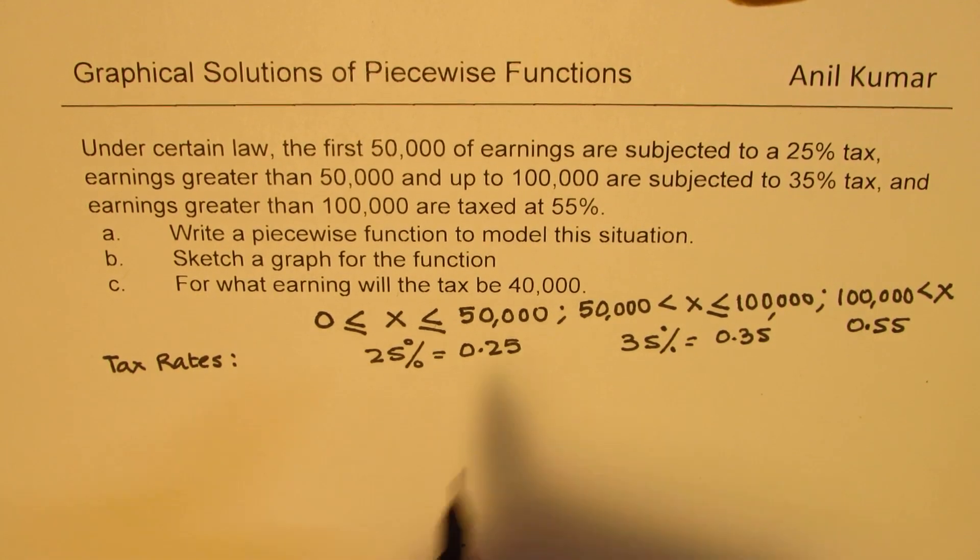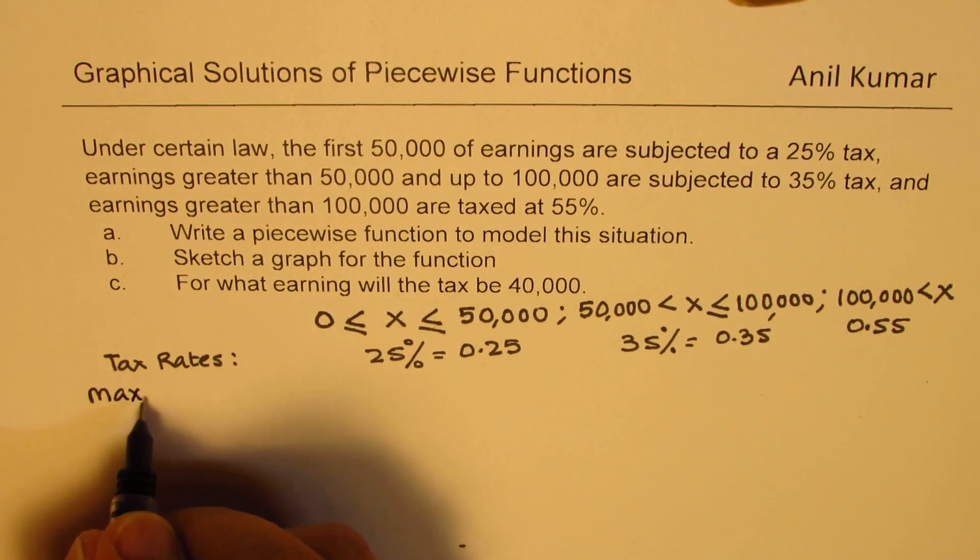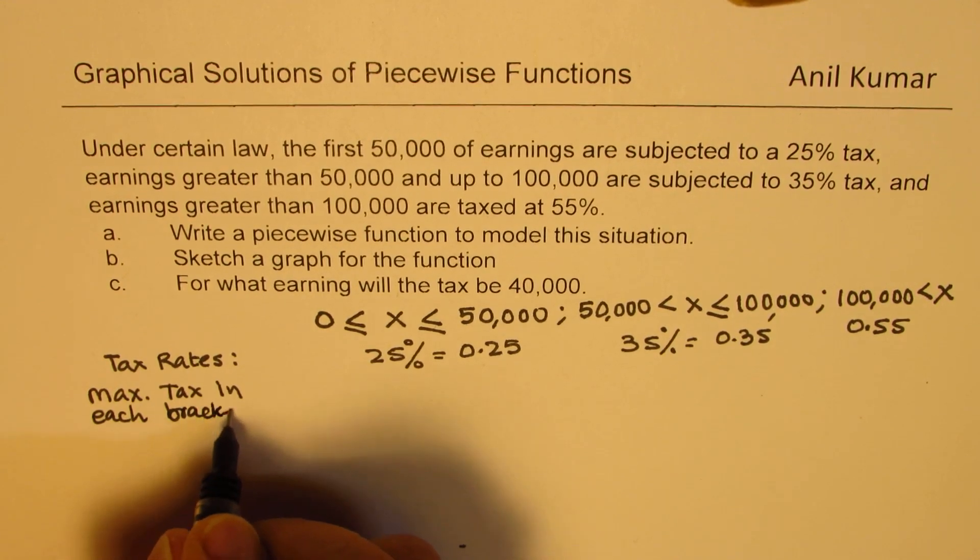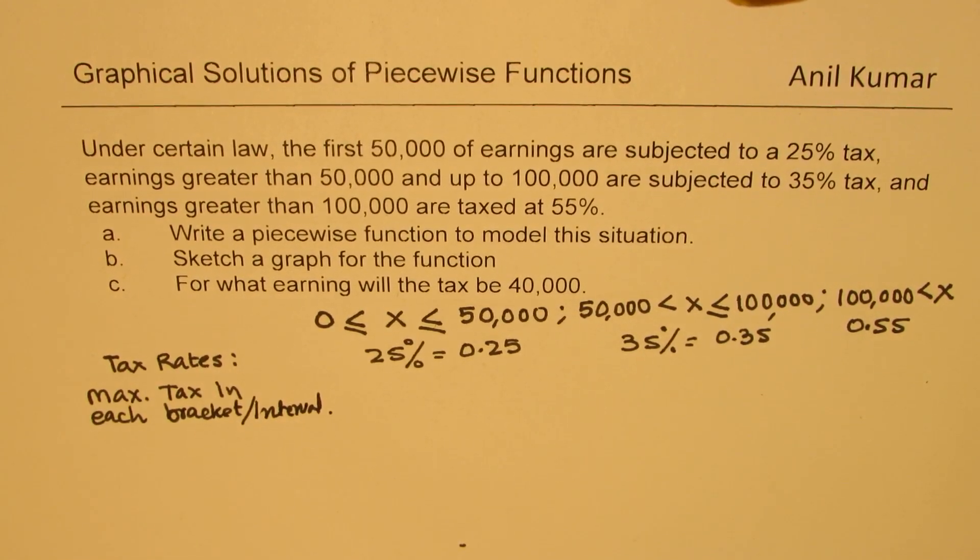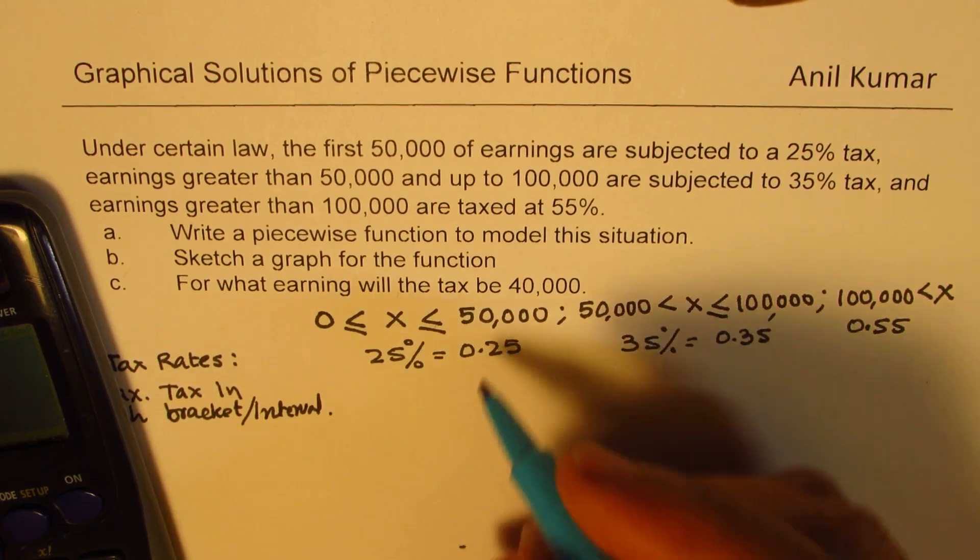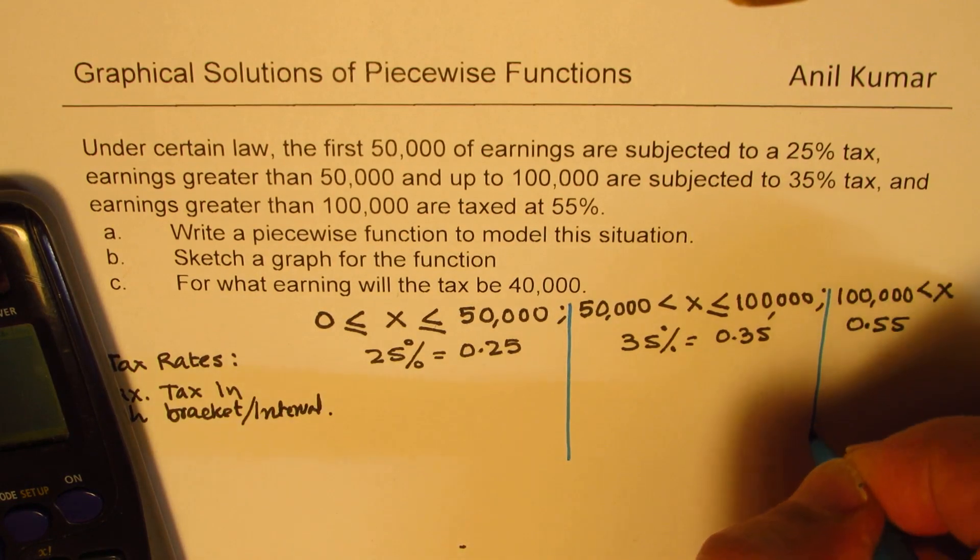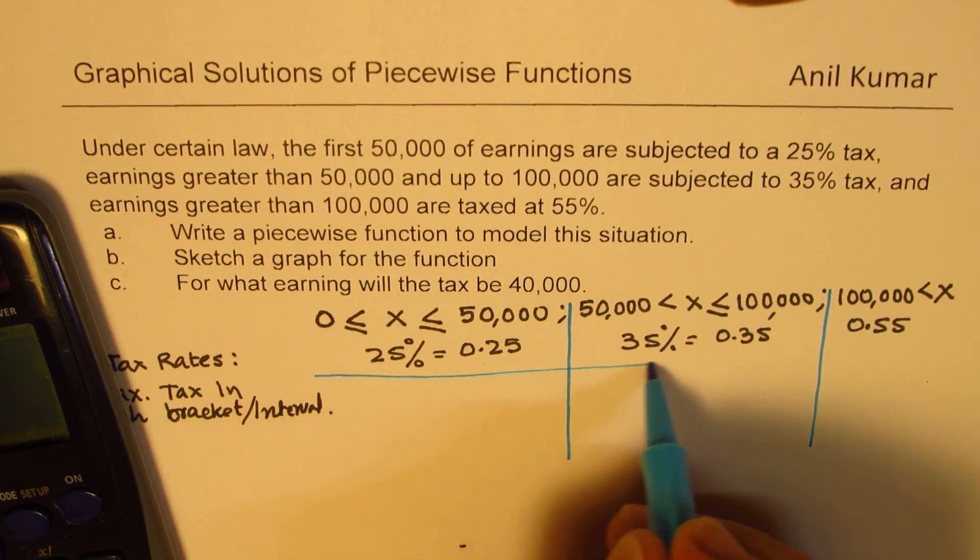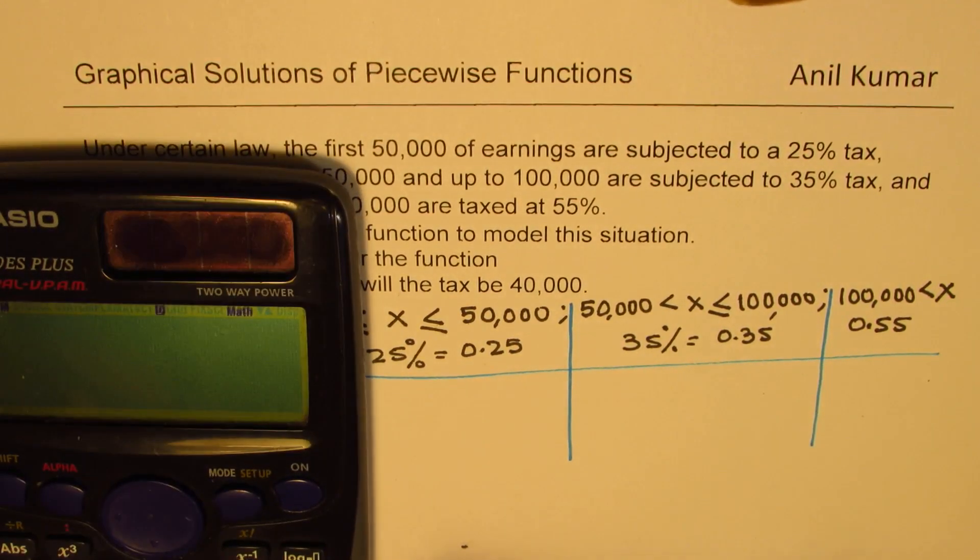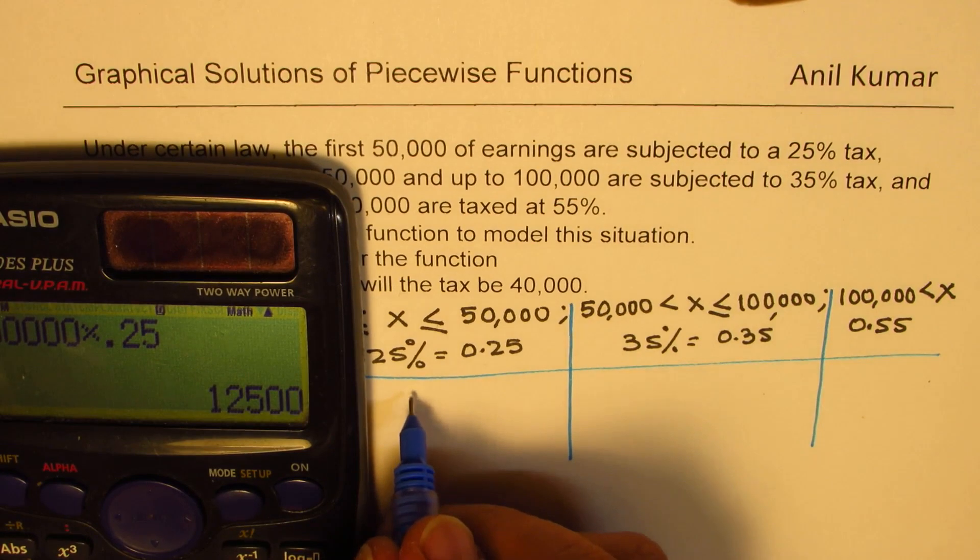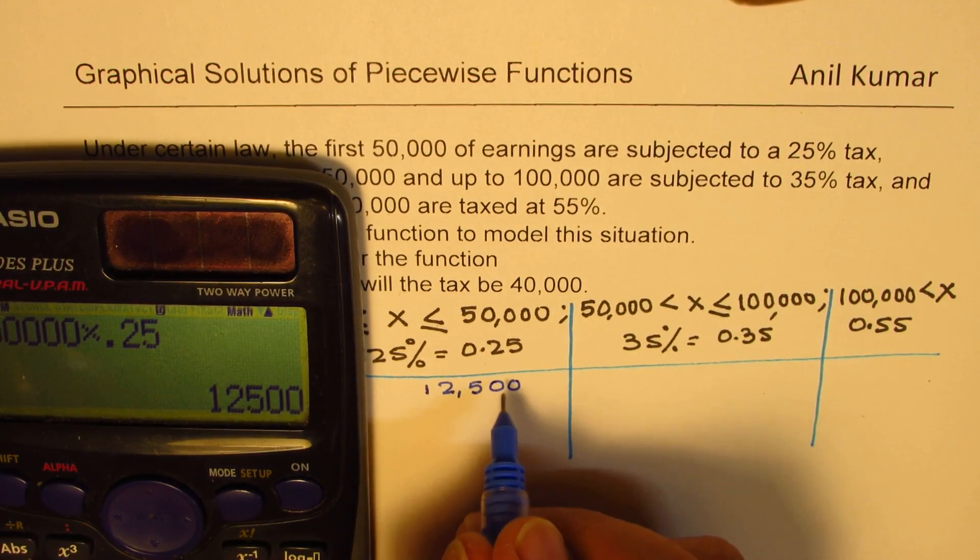Now let us figure out the maximum tax in each bracket or interval. The maximum tax will be on the maximum amount. So we need to multiply the maximum with the tax rate. 50,000 times 0.25 gives us 12,500. So we get 12,500 as the maximum.